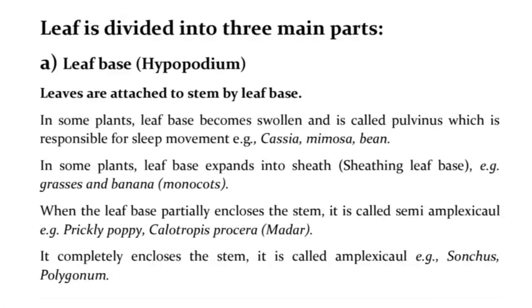When the leaf base partially encloses the stem, it is called semi-amplexical, e.g., prickly poppy and Calotropis procera (madar). When the leaf base completely encloses the stem, it is called amplexical, e.g., Sonchus and Polygonum.